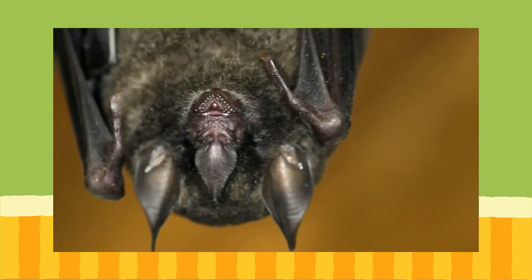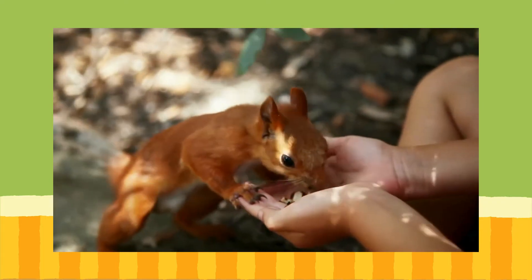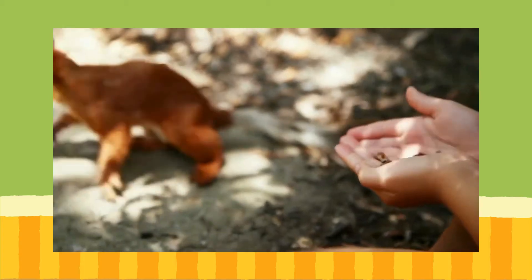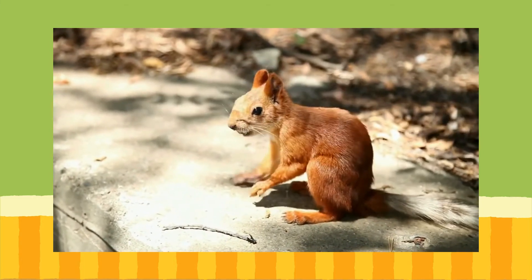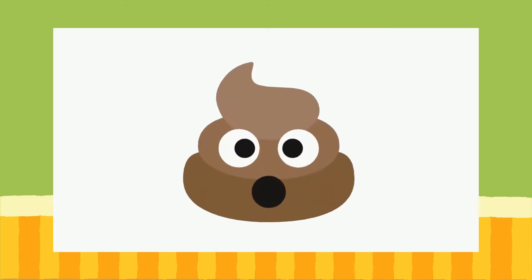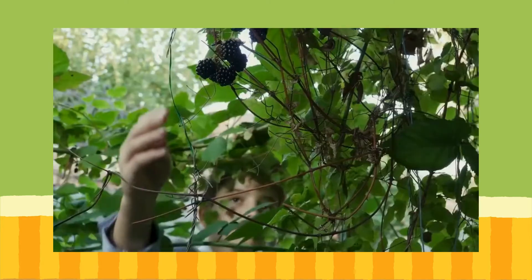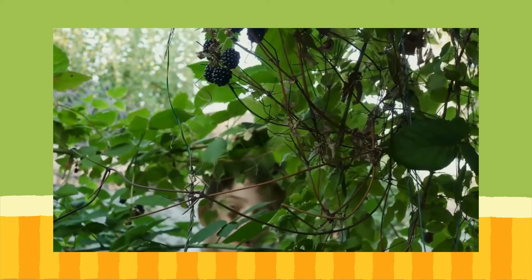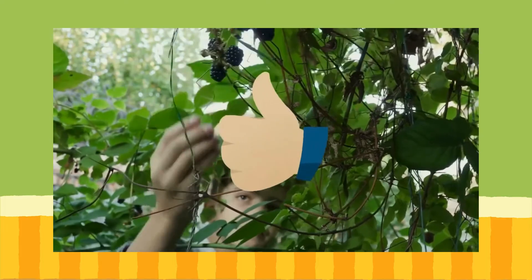Other animals, like a squirrel and chipmunk, could be considered spreaders. When they gather and store seeds and acorns and even berries, some get left behind, and some also get left behind after going poo. These seeds, like the blightberry bush, will grow into plants that provide food for other animals.